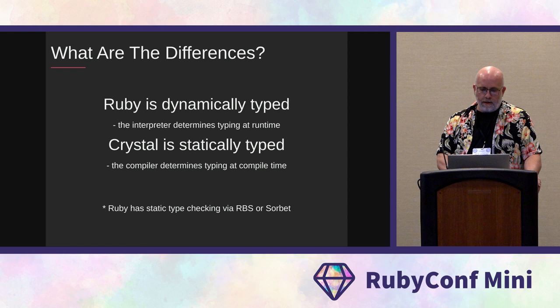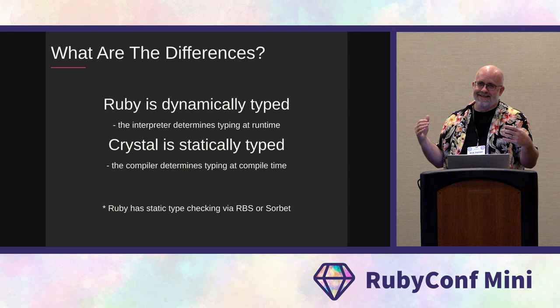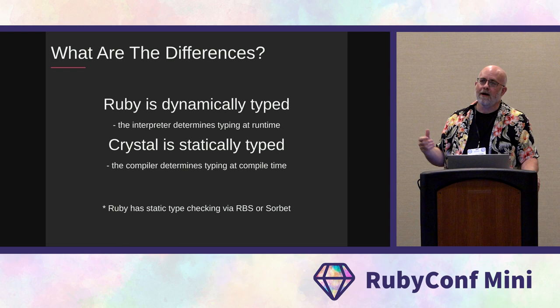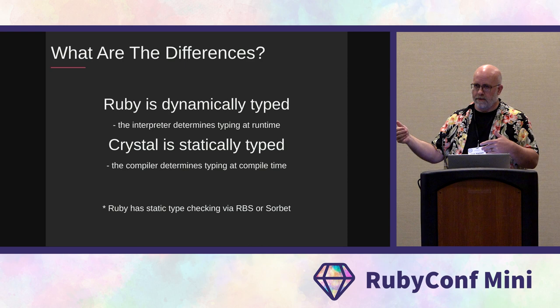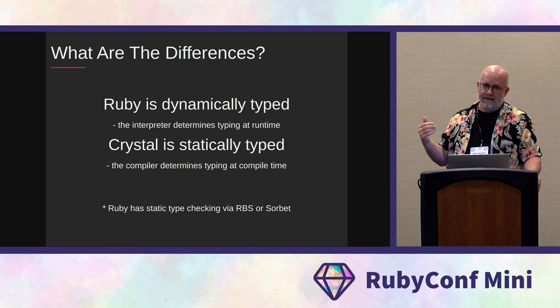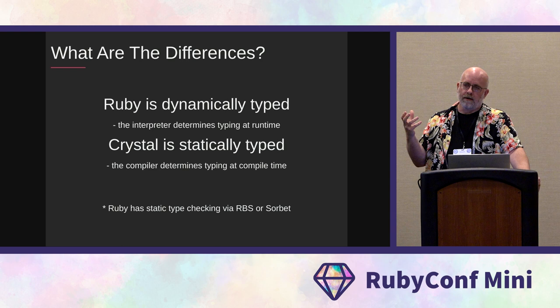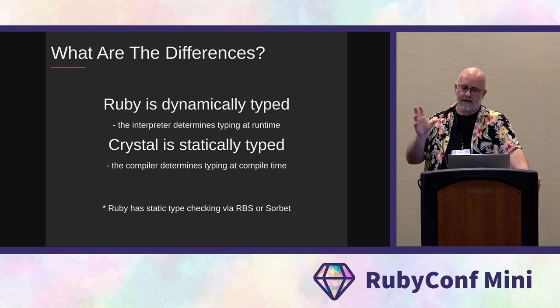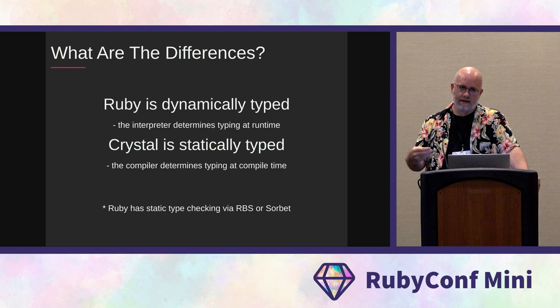Ruby is dynamically type-checked, meaning the Ruby interpreter checks the types of your data objects at runtime. If you get something wrong, you won't know it until you run your code and Ruby figures out there's a mismatch and throws an error. Crystal is statically type-checked: when the compiler builds the software, it checks before it ever builds the executable to make sure all the types make sense and match. Ruby does have static type checking with RBS or Sorbet, but it is not directly integrated into the language — it's kind of a bolt-on.